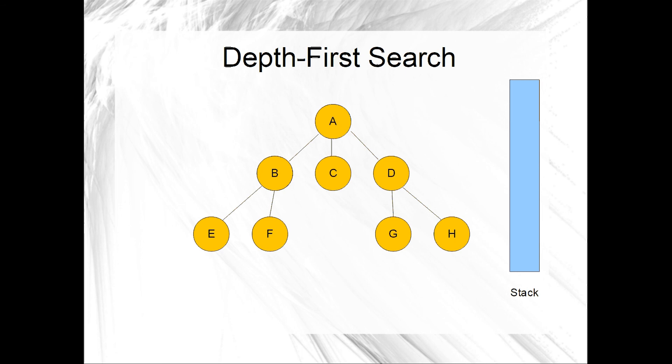In this example, we will have a tree-like graph with vertices A through H. We will indicate that vertices have been marked with an orange color; unmarked vertices will be white. To the right, you'll notice a blue shaded region which represents our stack, where we will keep track of the vertices that have been pushed and popped to and from the stack.